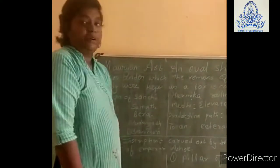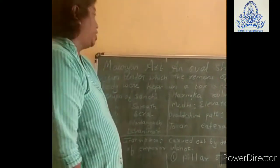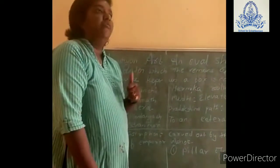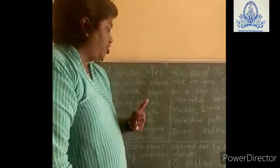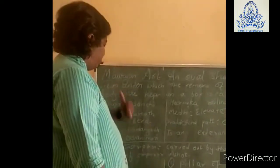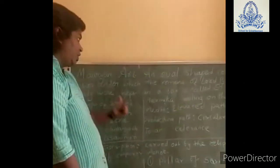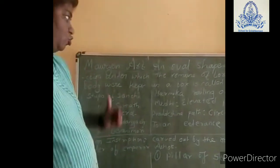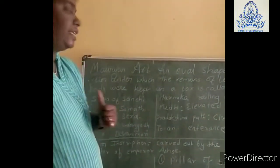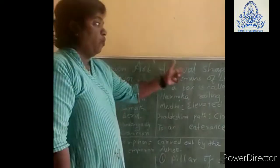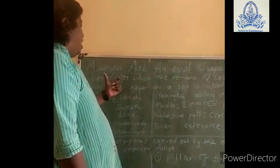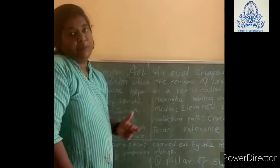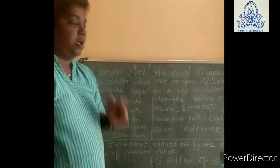Today we are going to continue with the next topic, which is Mauryan art. In Mauryan art, we have different architectural styles in which we are going to study about stone inscriptions as well as stupas. First, we are going to study about stupa. A stupa is an oval shaped construction under which the remains of Lord Buddha were kept in a box.